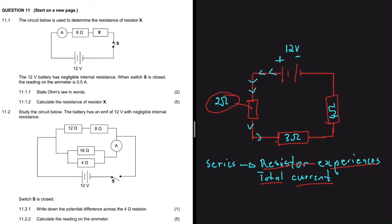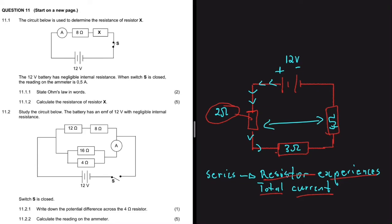This is where I lose a lot of people. Look at the 2-ohm resistor and the 4-ohm resistor — is the 2-ohm resistor in parallel with the 4-ohm resistor? No, they are all in series because they are experiencing total current. In physics we don't talk about parallel the same way we do in math. In math things can look visually parallel, but in electric circuits we're talking about current — are they receiving total current or not? The 2-ohm and 4-ohm resistors are both receiving total current, so they're in series.